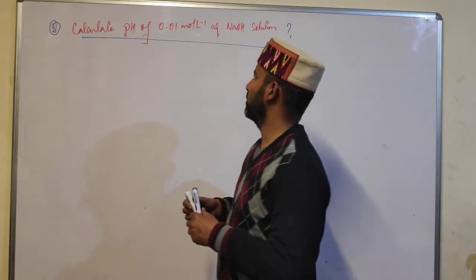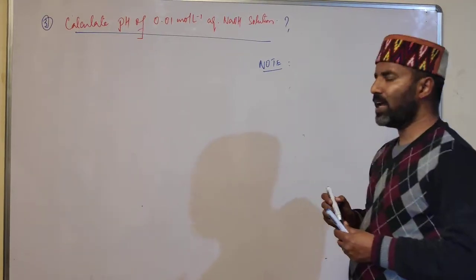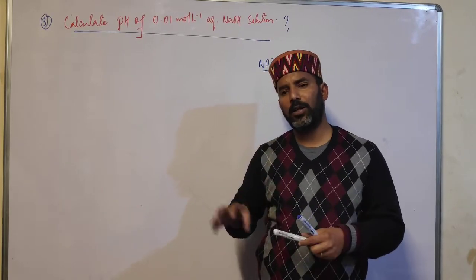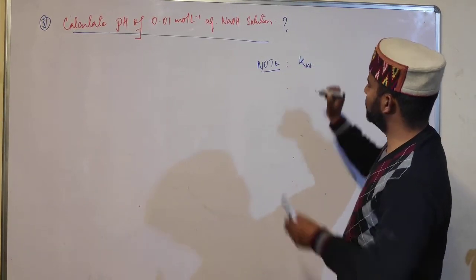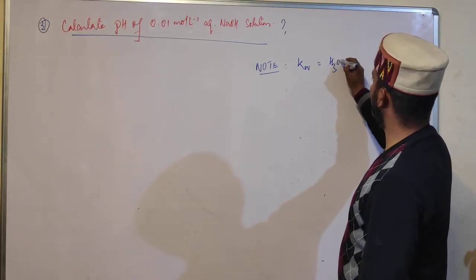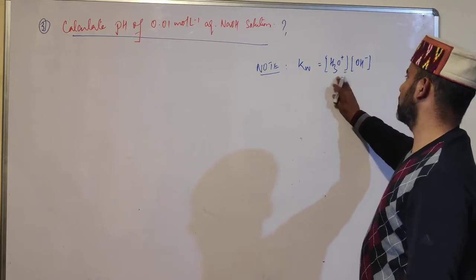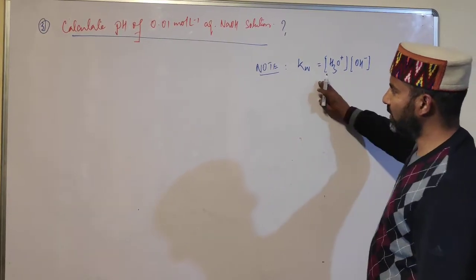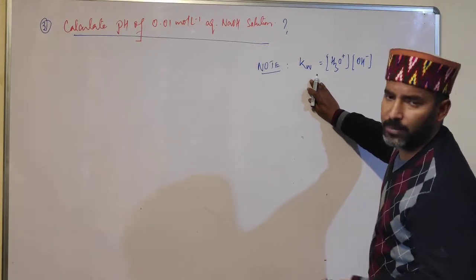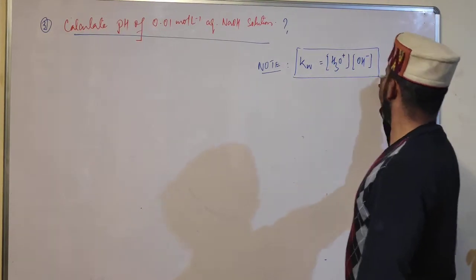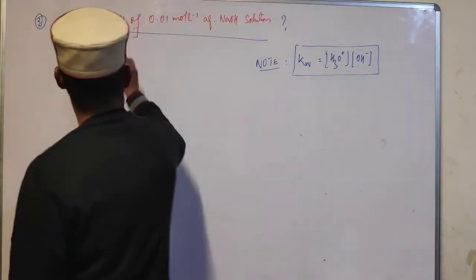Now I'll show how to calculate the pH of a solution of an alkali or base. One very important point: when we add acid or base to water, the hydronium and hydroxyl ion concentrations change, but the ionic product of water Kw remains constant. Kw = [H₃O⁺][OH⁻] at a given temperature is always constant.